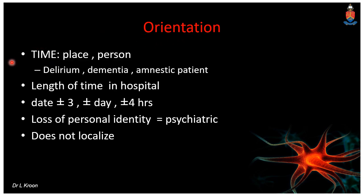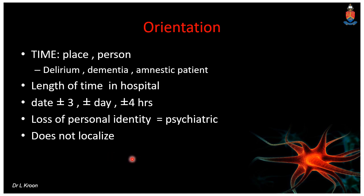To test for orientation, you assess whether the person is oriented to time, place, and person. This typically becomes distorted in delirium and in amnestic patients. In severe dementia or major neurocognitive disorder, distortion of orientation can occur, but this is typically a very late finding. Acute disorientation should prompt other differentials first. Orientation doesn't localize precisely, but it's predominantly a frontal lobe function, specifically involving the mesial frontal lobes' energization process.